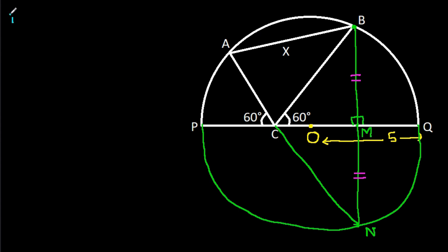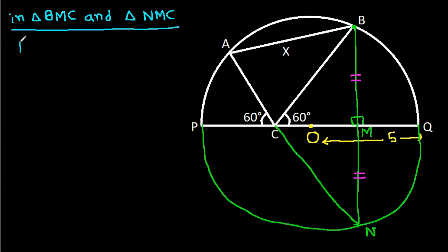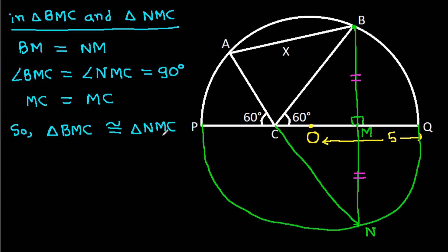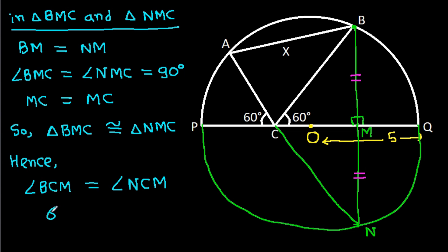In triangle BMC and triangle NMC, angle BMC is equal to angle NMC, which is 90 degrees, and MC is common. So triangle BMC is congruent to triangle NMC. Hence, angle BCM is equal to angle NCM, and angle BCM is 60 degrees.